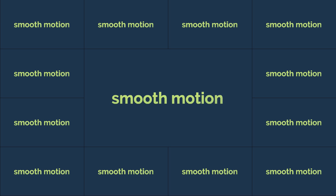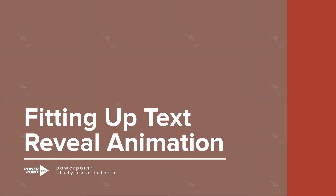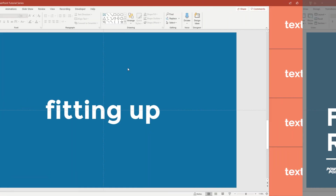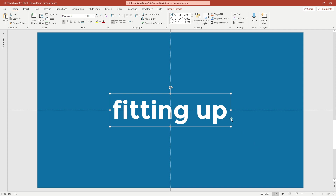What's up guys, now we will learn how to make a fitting up text reveal animation in PowerPoint. Let's get started. We'll animate this text — first let's give this text a little gradient effect.